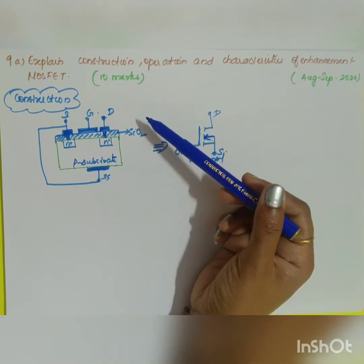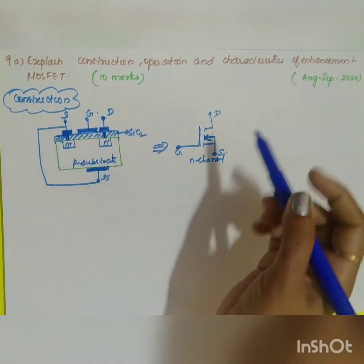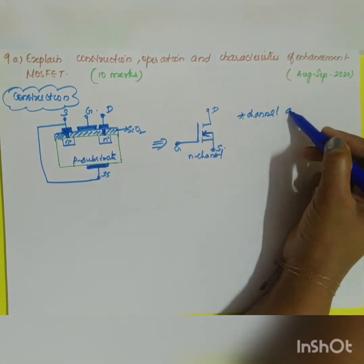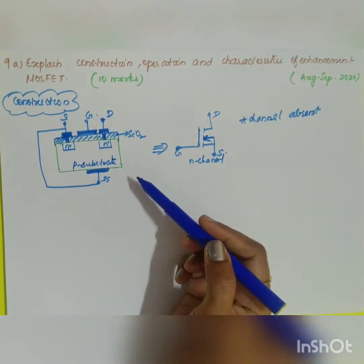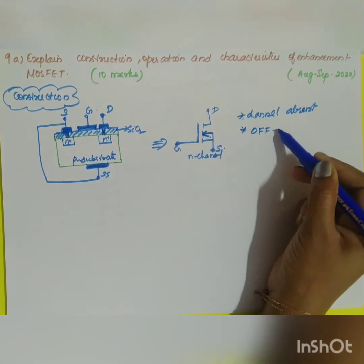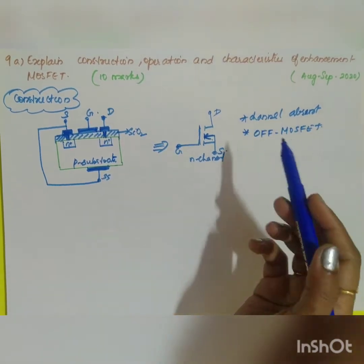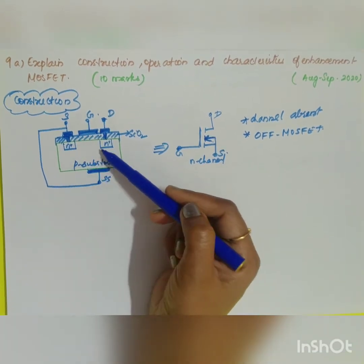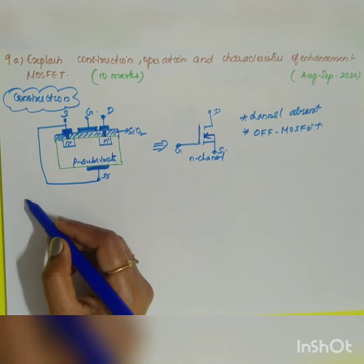The very important characteristic feature of the construction is that it does not have any channel — the channel is absent. That is the difference between the depletion MOSFET and the enhancement MOSFET. It is generally called the 'off MOSFET.' There is no channel between the two n-type semiconductors.